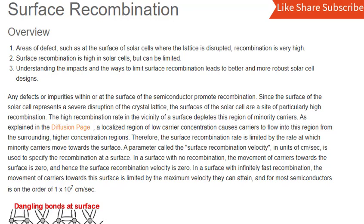Any defects or impurities within or at the surface of the semiconductor promote recombination. Since the surface of the solar cell represents a severe disruption of the crystal lattice, the surfaces of the solar cell are a site of particularly high recombination.